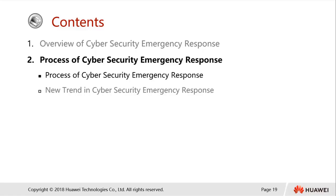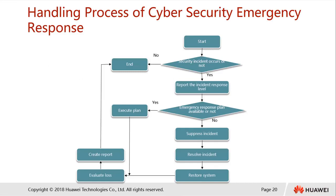This is the flow process of handling cybersecurity emergency response. Firstly, we examine whether a security incident has taken place. If yes, we report the incident response level according to severity. We then check whether emergency response plans exist. If plans are not available, we try to suppress the incidents to prevent damage from expanding and attempt to resolve the incident if possible.